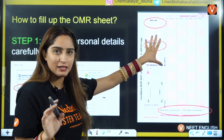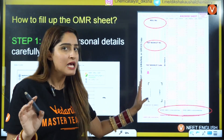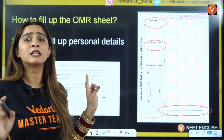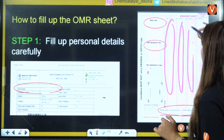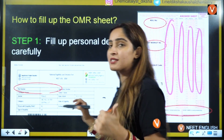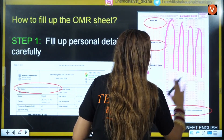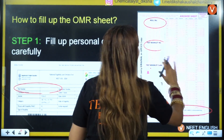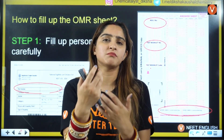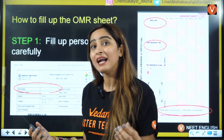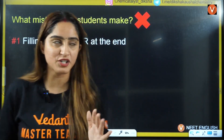Next, fill the test booklet number and all your other details. Then the main thing is the answers — the sections where you fill your answers for Physics, Chemistry, Botany, and Zoology. Different students have different strategies, but strategy is what matters most while filling the OMR sheet.